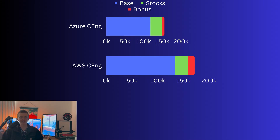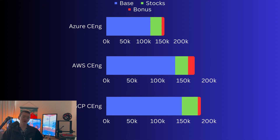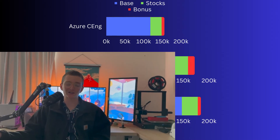Then coming in at the highest again we have the Google Cloud Platform role, coming in at about $185k, which is a pretty decent jump up from AWS. In this case the sign-on bonuses and external bonuses are lower than AWS, but they're making headway in the base pay and total stock grants. So you can see there is quite a big difference between that Azure role and that Google Cloud Platform role in cloud engineering.